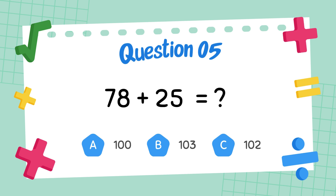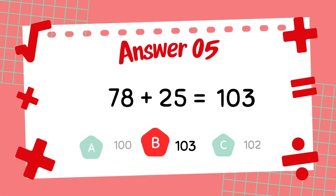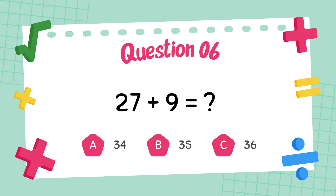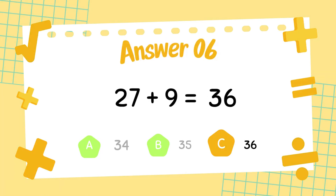What is 78 plus 25? The answer is 103. What is 27 plus 9? The answer is 36.